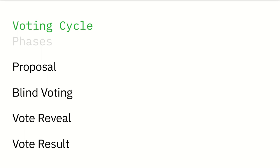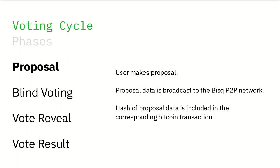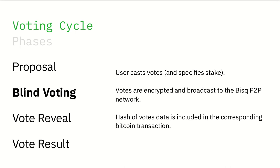Now we've already covered the practical side of this process, but what's happening in the background? During the proposal phase, any user can make a proposal — contributor or trader. When a user makes a proposal, the proposal data is broadcast to the BISC peer-to-peer network, and the hash of that proposal is included in the corresponding Bitcoin transaction. During the blind voting phase, users cast their votes. Votes are encrypted — hence the term blind vote — and then broadcast to the BISC peer-to-peer network. A hash of the vote is stored in the corresponding Bitcoin transaction.